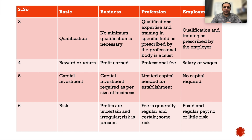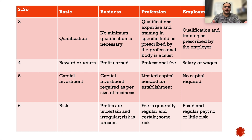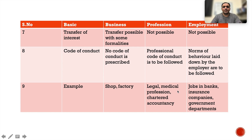Regarding risk: in business, profits are uncertain and irregular, so risk is present — you might succeed or fail; in profession, fees are generally regular and certain, though some risk exists; in employment, pay is fixed and regular with little or no risk, though in rare cases of recession an employer might downsize. Regarding transfer of interest: in business, transfer is possible with some formalities; in profession, no transfer is possible; in employment, there is also no transfer.